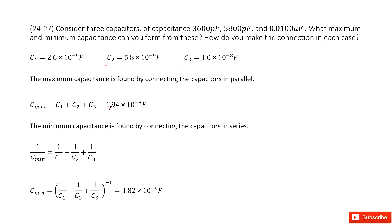The next one is the minimum capacitance. For minimum capacitance, we can consider the series connection. The series connection satisfies: 1 over the equivalent capacitance, in this case C minimum, equals 1 over C1 plus 1 over C2 plus 1 over C3. Then you get the equation for C minimum — input all the given quantities and get the answer. Thank you.